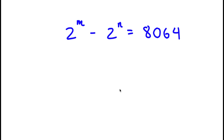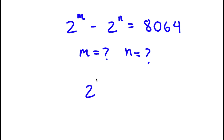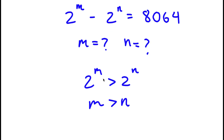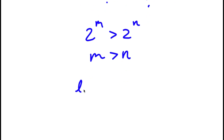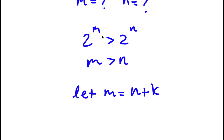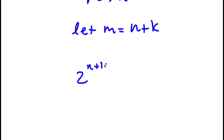In this problem I have 2 to the power of m minus 2 to the power of n is equal to 8,064, and I want to find the values of m and n. Because 2^m minus 2^n is positive, we know that m is greater than n. So I'm going to let m equal n plus k, where k is a positive integer. So I have 2 to the power of n plus k minus 2 to the power of n equals 8,064.